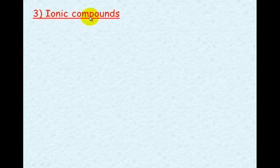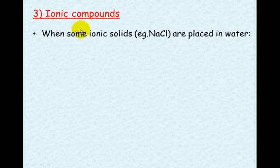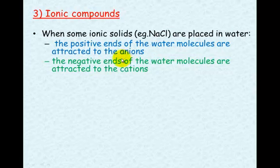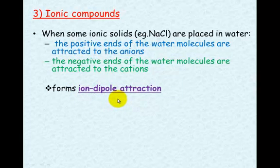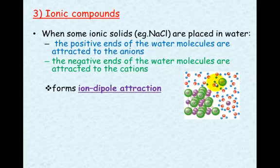Last but not least, ionic compounds are soluble in water. When some ionic substances — for example sodium chloride — are placed in water, the positive ends of water molecules are attracted to the anions and the negative ends are attracted to the cations. This forms an ion-dipole attraction. The chloride ion is surrounded by water molecules, and the sodium ion is surrounded by water molecules as well. Dissolving is simply water molecules being attracted to a lattice and pulling those ions out one by one.